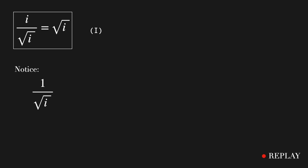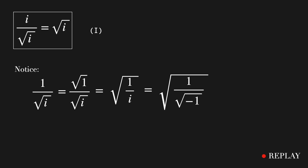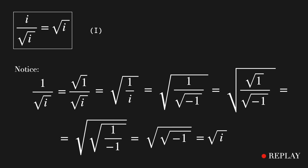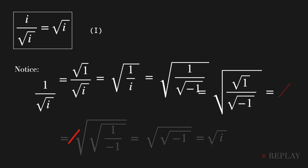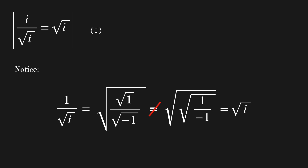1 over the square root of i equals the square root of 1 over the square root of i, which equals the square root of 1 over i, which is the same as the square root of 1 over the square root of minus 1, which is the same as the square root of the square root of 1 over the square root of minus 1. And this is the same as the square root of the square root of 1 over minus 1 — which equals... this is not true. So actually, our second equation is not true.